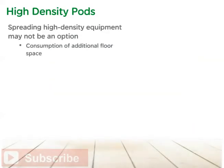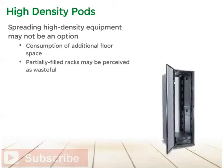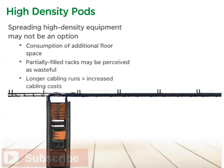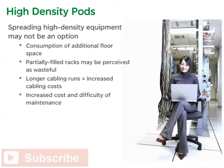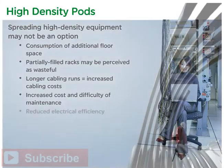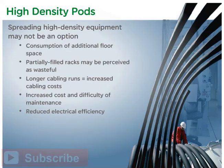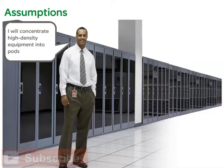However, the spreading out strategy may not be a viable option for a number of reasons: consumption of additional floor space, which may be difficult to justify or simply not possible; executive management perception that partially filled racks are wasteful; increased cabling cost because of longer runs; increased cost and difficulty of maintenance; reduced electrical efficiency of the data center. Because cooling system air paths are longer and less targeted, this increases mixing of hot and cold air, which results in lower return temperature to the air conditioner. For these reasons, it is expected that data center operators will begin to deploy IT equipment at its full density capacity in pods, rather than try to stay within an overall room power density by spreading out the load.